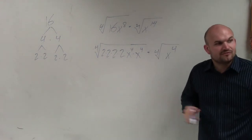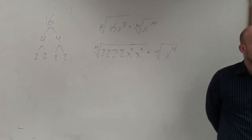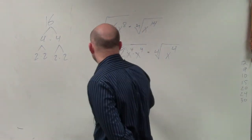Now, when I'm taking the fourth root of 2 times 2 times 2 times 2, that's just going to equal 2.